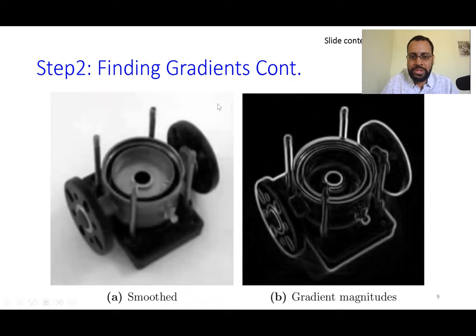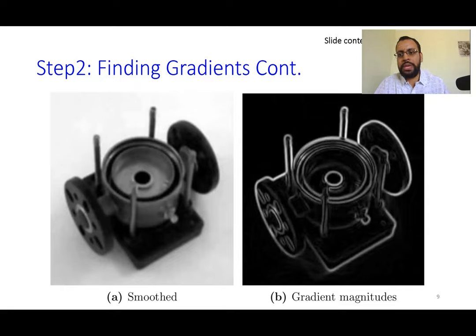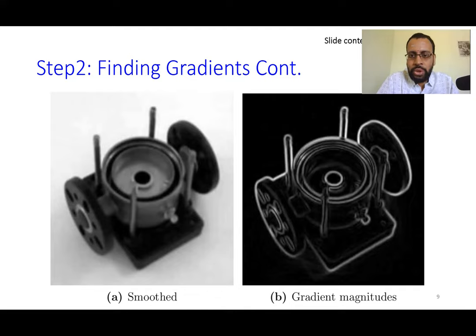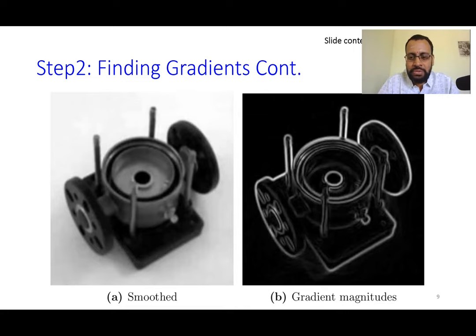Now, what problem are we facing? The thickness of the edge. We want just a single response — a single pixel-wide edge — instead of a thick one. One could take a second derivative to get zero-crossings at the maximum, which gives a better edge, but we don't want to compute another gradient. Instead, we want something else.